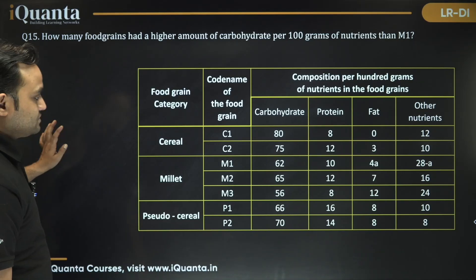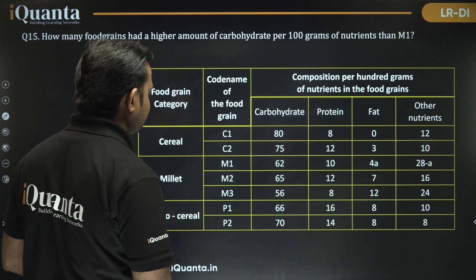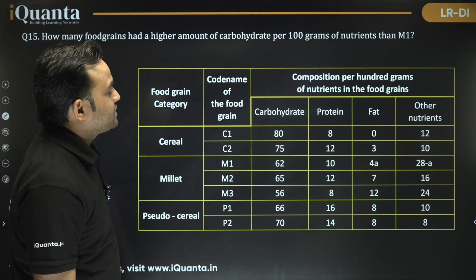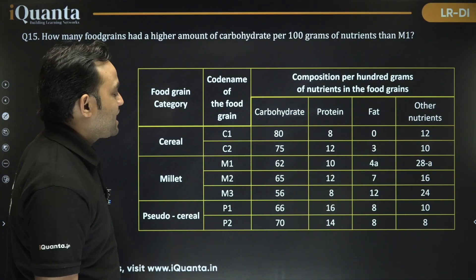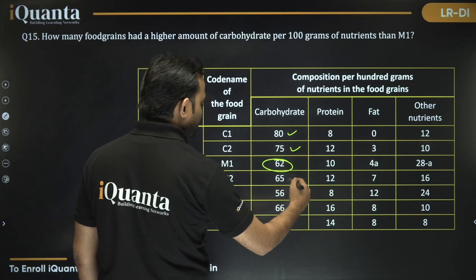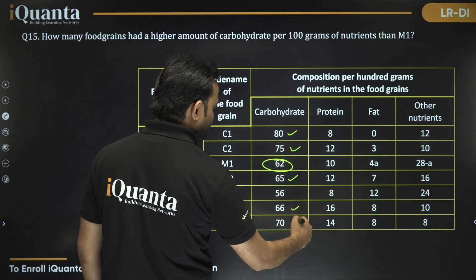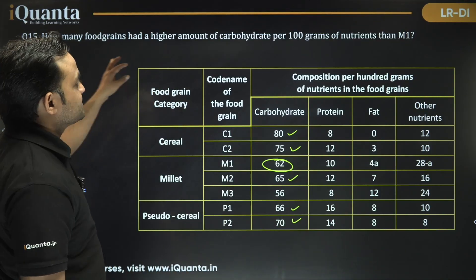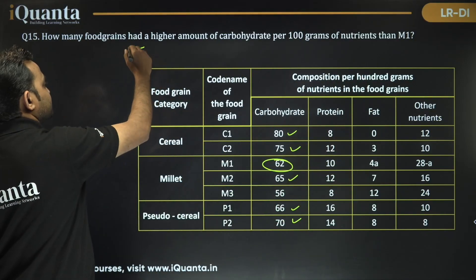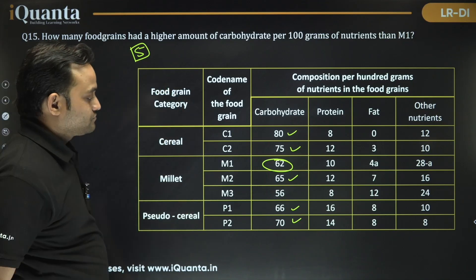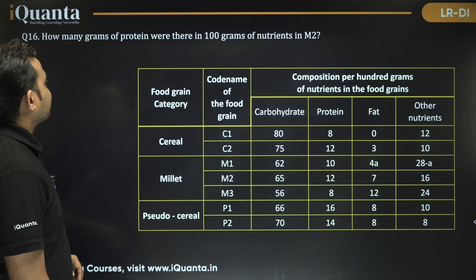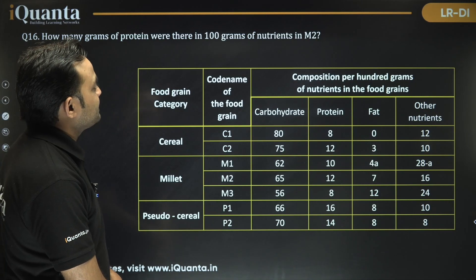Question 1: How many food grains had a higher amount of carbohydrate per 100 grams than M1? M1's carbs = 62. Counting those with carbs greater than 62: M2 (no), M3, C1, C2, P1, P2 — that's 5 food grains. Answer: 5.